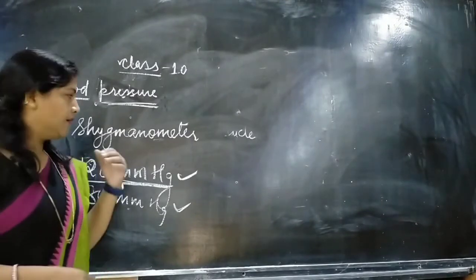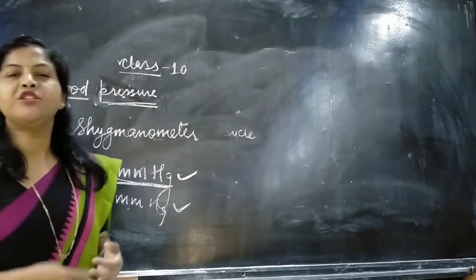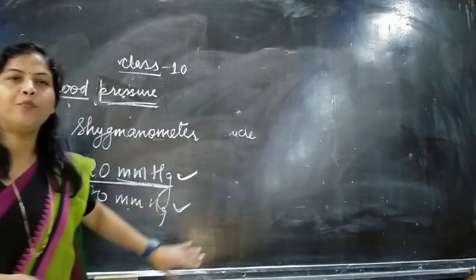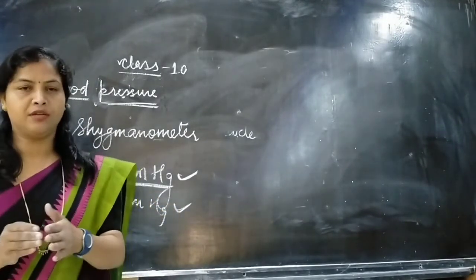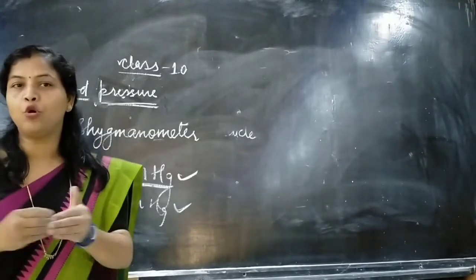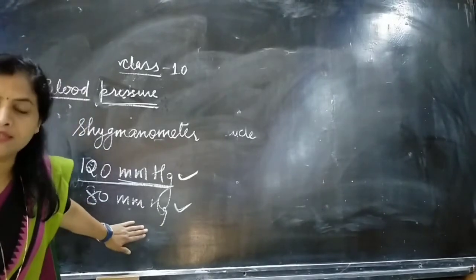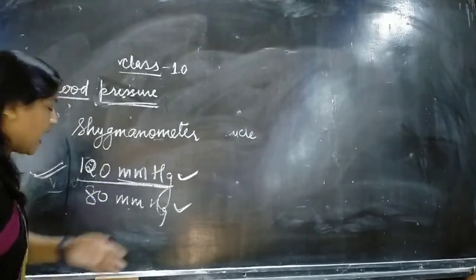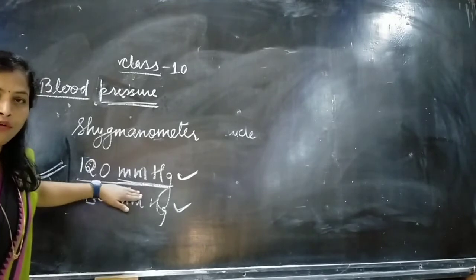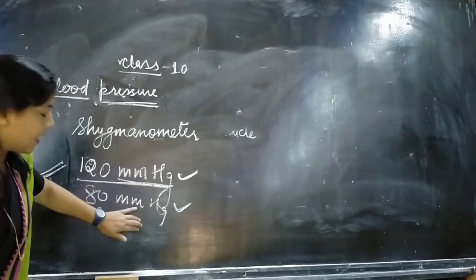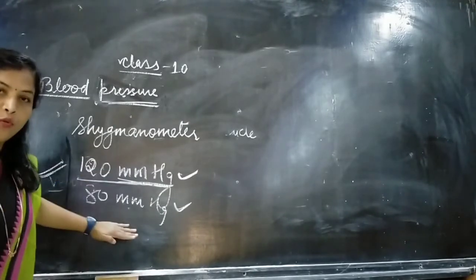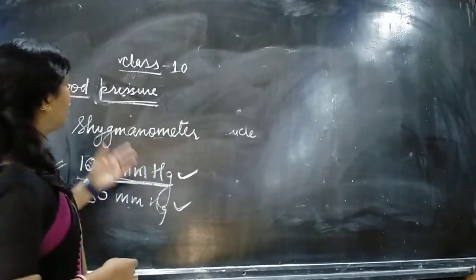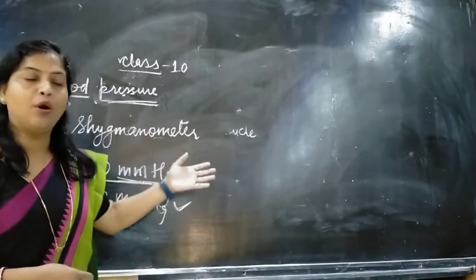Low pressure is also measured by the sphygmomanometer. The reason for low blood pressure is decreased resistance to the flow of blood in the arteries. In that condition, the measurement of both systolic and diastolic pressure decreases — it goes down. So this is the reason for high blood pressure and low blood pressure.